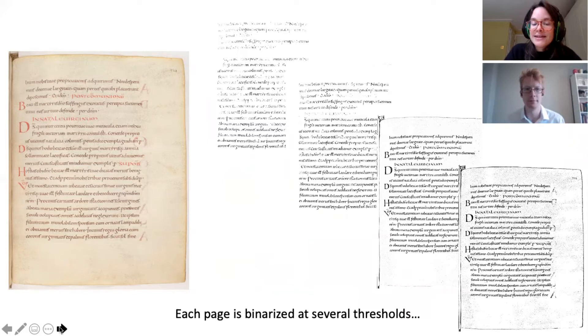Our binarization works at different levels of aggressiveness. When the level is too low, too much smudge remains. When it is too high, the letters start disappearing, as you see in the slide here. Our program, therefore, binarizes each page at different thresholds and then afterwards you have a range of versions to choose from.